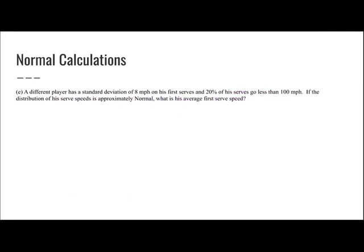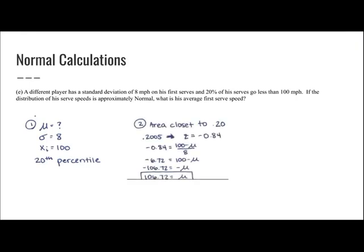A different player has a standard deviation of 8 miles per hour, and 20% of his serves go less than 100 miles per hour. If the distribution is approximately normal, what is his average first serve speed? I know the standard deviation, the raw score of 100, and that he's at the 20th percentile. The closest area to 20% is 0.2005, giving a Z-score of negative 0.84. Solving for the mean gives 106.72. So the fastest 30% of his serves go at least 118 miles per hour.